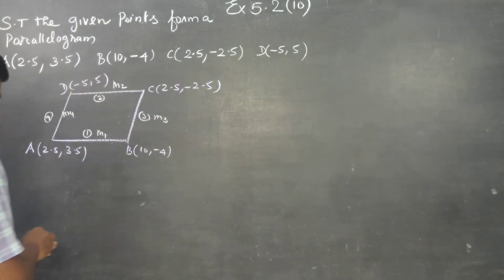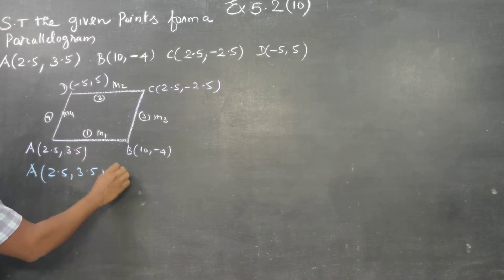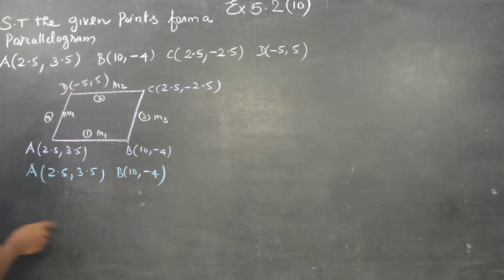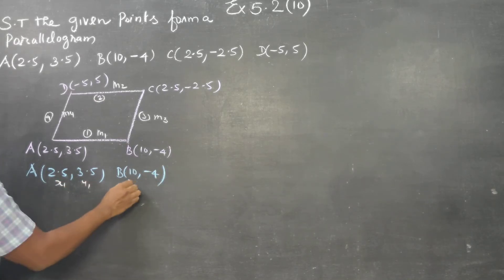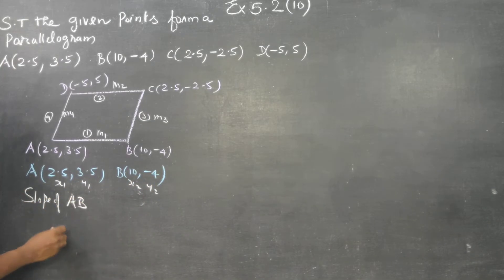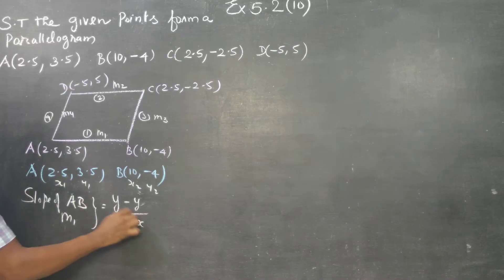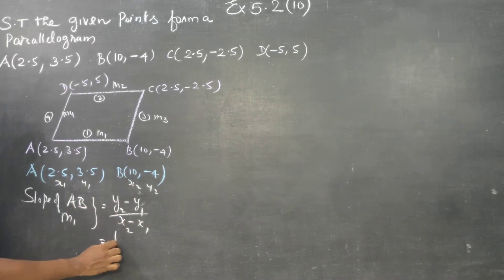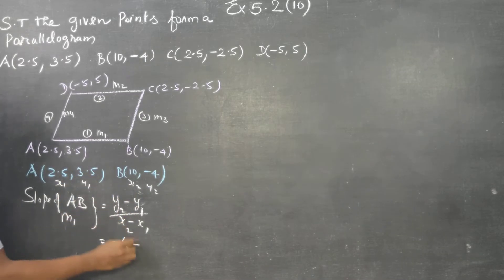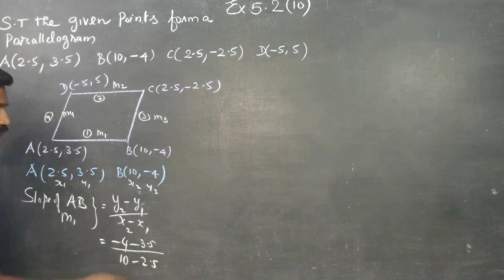I will start with A. My A is 2.5, 3.5 and B is 10, minus 4. This is my X1, Y1, X2, Y2 — slope of AB. What is my M1? The formula will be Y2 minus Y1 by X2 minus X1. What is my Y2? Y2 is minus 4, minus Y1 is 3.5, divided by X2 is 10 minus 2.5.